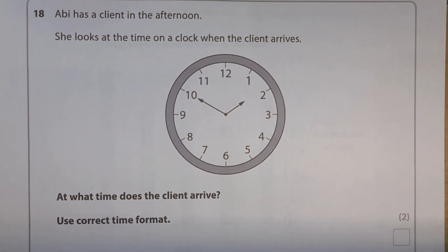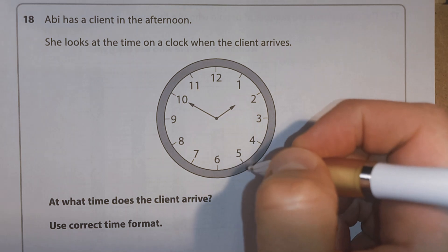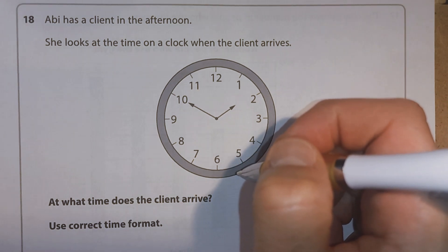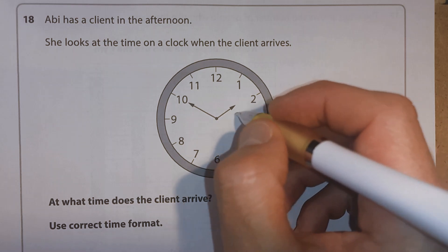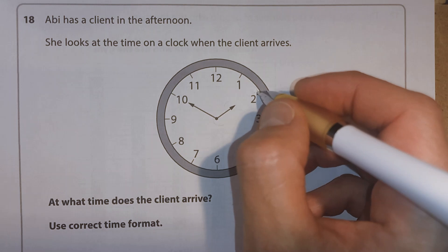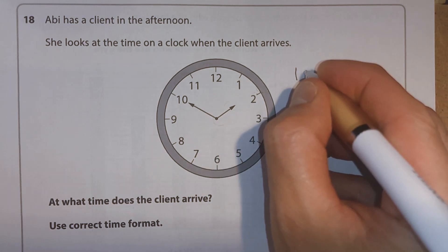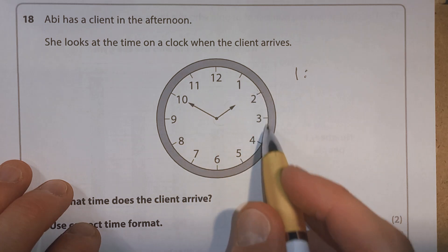And the last question is question 18. Abbey has a client in the afternoon. She looks at the time on a clock when the client arrives. At what time does the client arrive? So there's a few different ways that you can write it. But if we look at the hour hand, first of all, we'll see that it's before the 2. Okay. So it's going to be one something. Okay. And remember, each of these is worth five minutes.